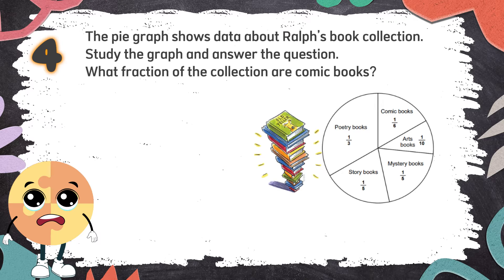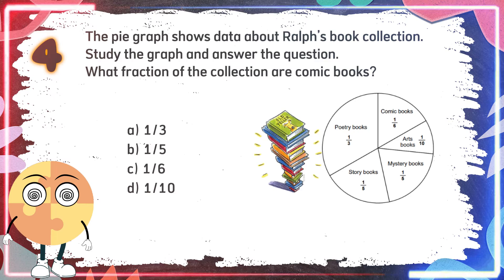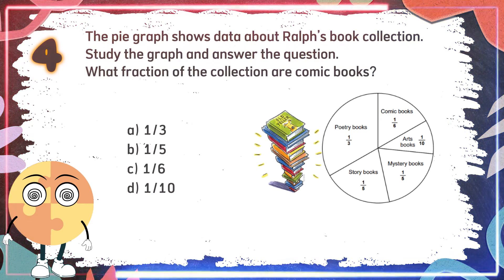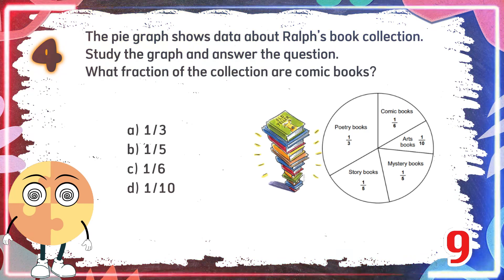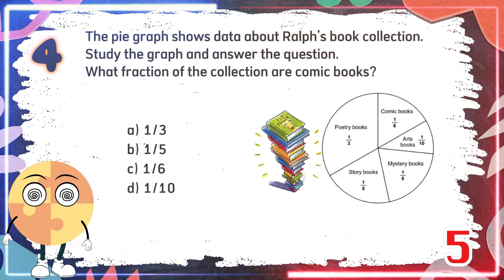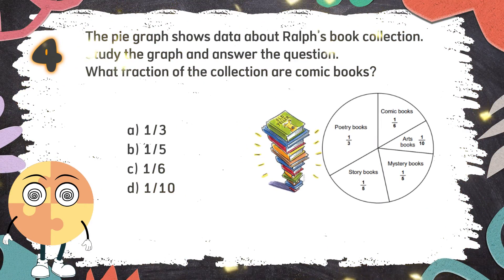Number 4. The pie graph shows data about Ralph's book collection. Study the graph and answer the question: What fraction of the collection are comic books? The choices are A. 1 third, B. 1 fifth, C. 1 sixth, D. 1 tenth. The correct answer is C. 1 sixth.